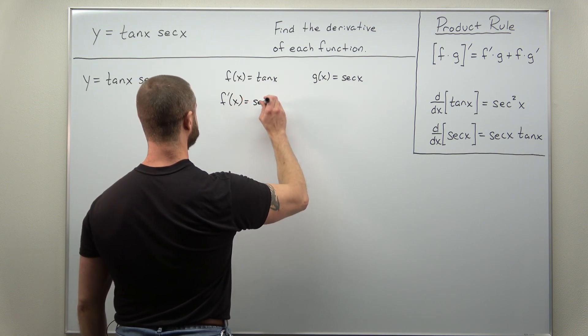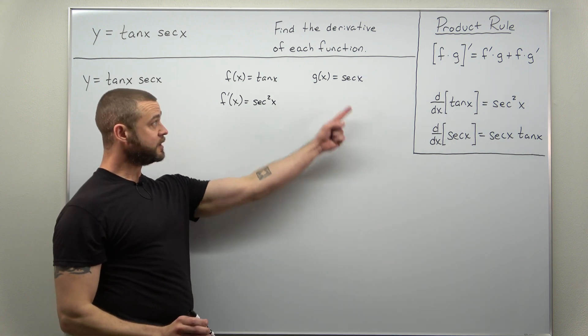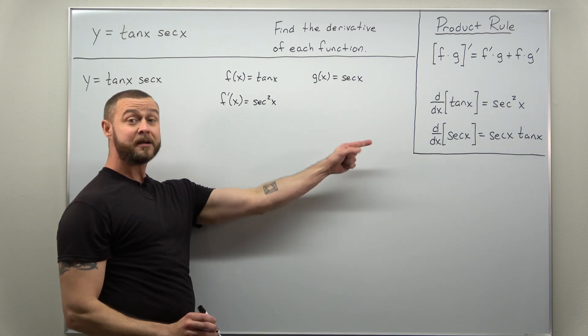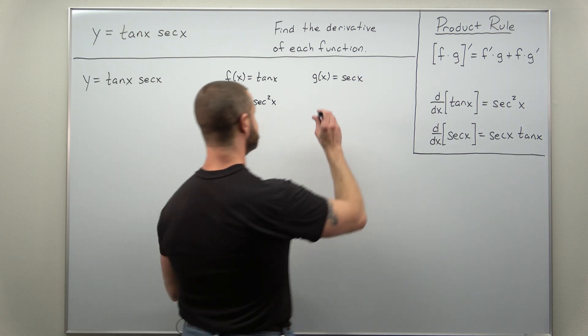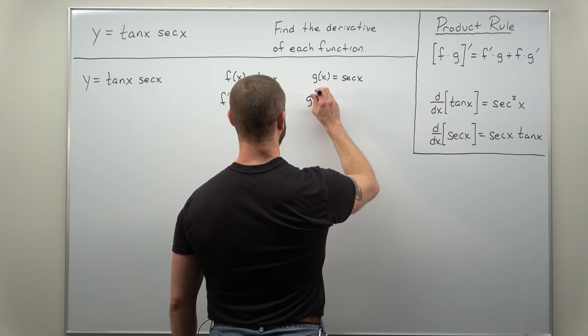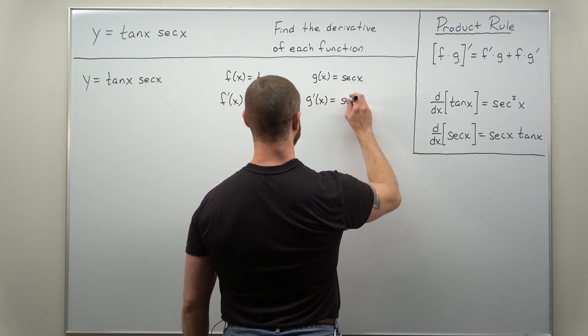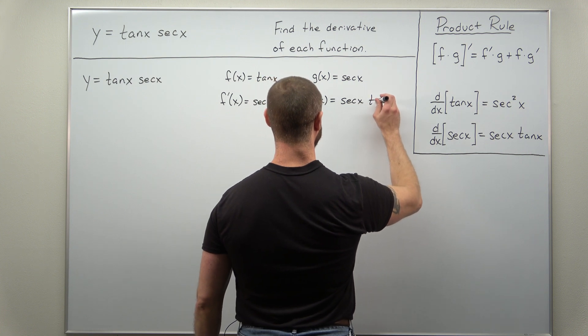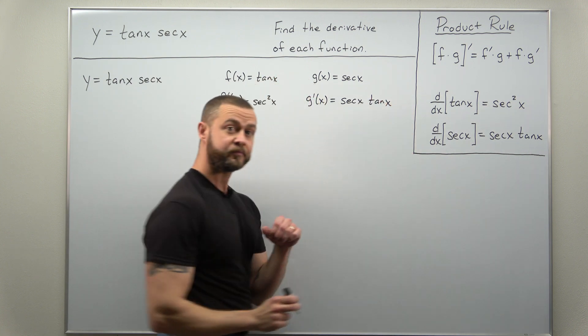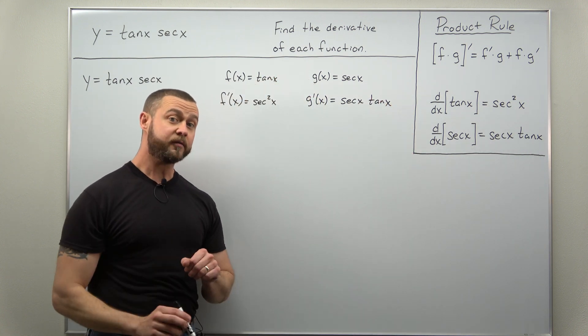And the derivative of secant x, that comes out to secant x times tangent x, and that gives us g prime: secant x times tangent x. And that's the work for the question.